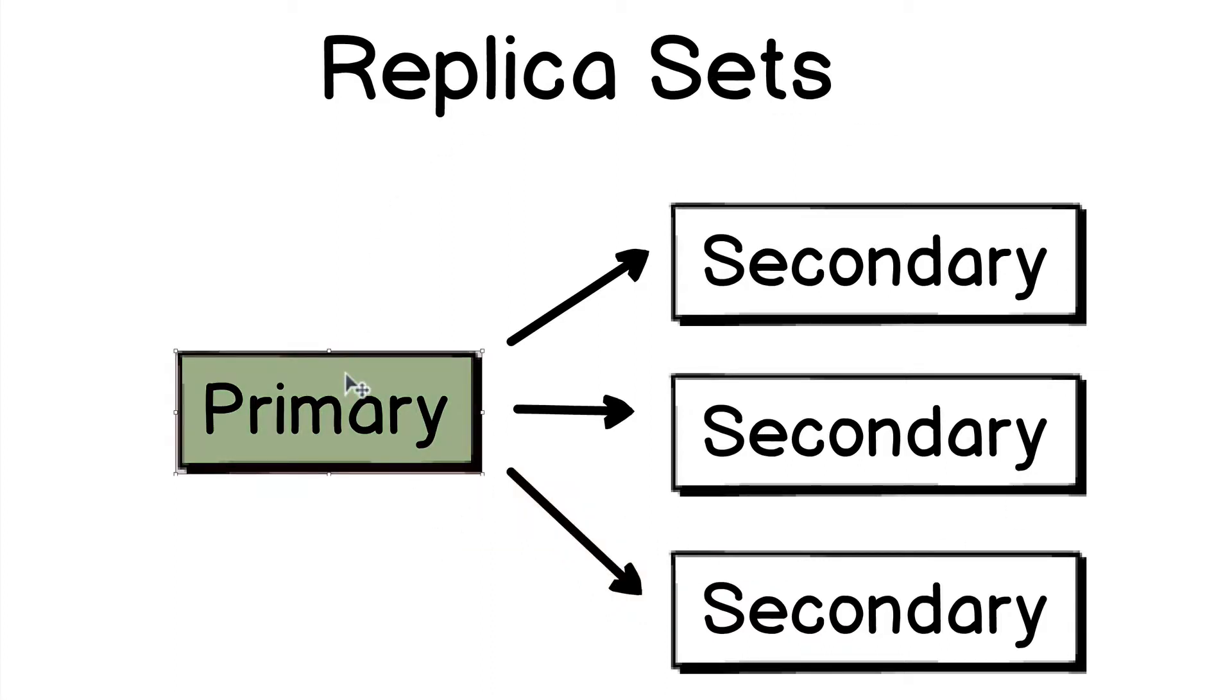If the primary server fails, the secondary servers will elect a new primary server. One of the secondary servers will become primary.